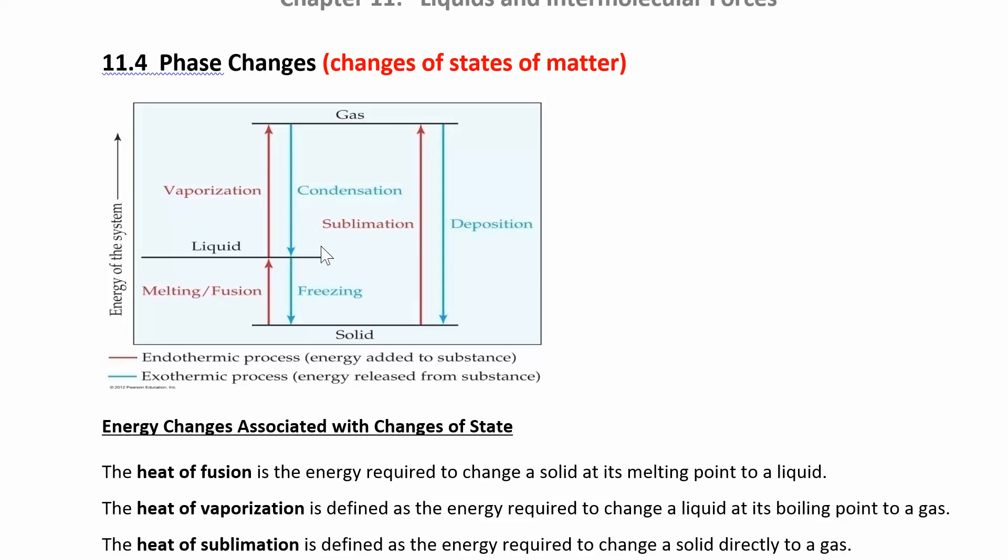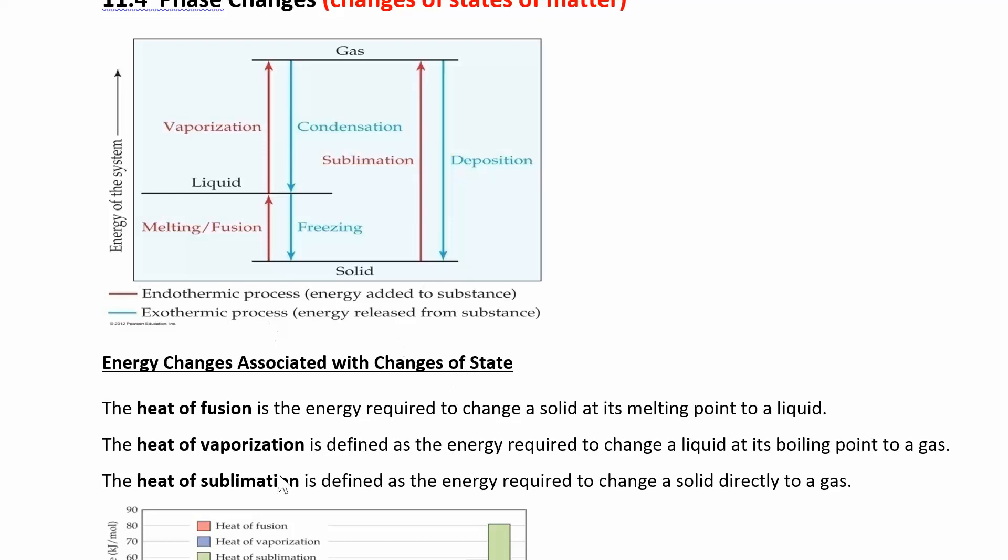Each one of those phase changes requires a certain amount of energy. So you have the heat of fusion, the heat of vaporization, the heat of sublimation. If you know the heat of fusion, the delta H, in one direction, just put a negative sign in front of it and that's what it is in the opposite direction. If something absorbs heat in one direction, it's going to be exothermic in the opposite direction.